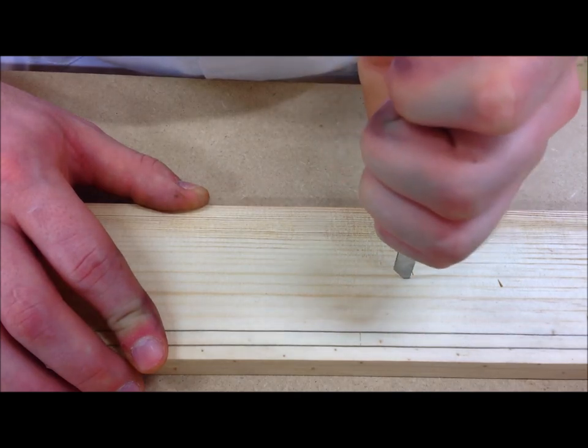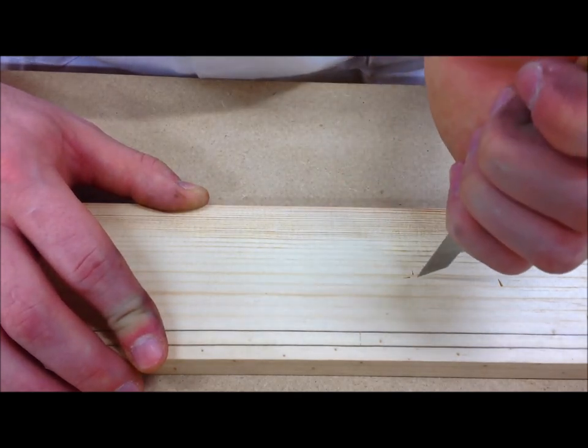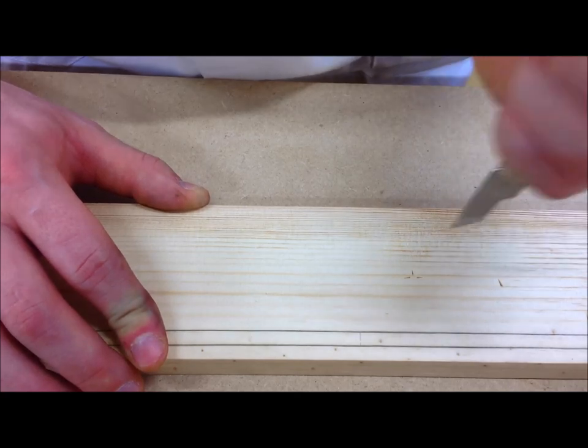As we can see, the stab knife can be used to make small decorative features such as stars and crosses.